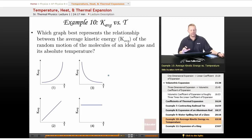All right, let's take a look at an example problem where we're looking at some graphs of average kinetic energy versus temperature. Which graph best represents the relationship between the average kinetic energy of the random motion of the molecules of an ideal gas and its absolute temperature?